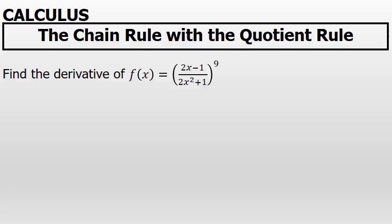To find the derivative of f of x equals the quantity of 2x minus 1 all over 2x squared plus 1 to the 9th power, the chain rule is required.